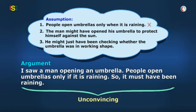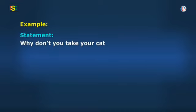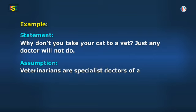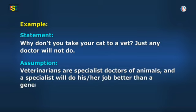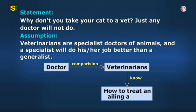Are you getting this, Vidya? Yes, Baba. Here are some more examples. Statement: 'Why don't you take your cat to a vet? Just any doctor will not do.' Assumption: Veterinarians are specialist doctors of animals, and a specialist will do his or her job better than a generalist. The speaker knows that, compared to just any doctor, veterinarians will know better how to treat an ailing animal, here a cat. He doesn't actually say so, but this is what he assumes. The assumption is valid.